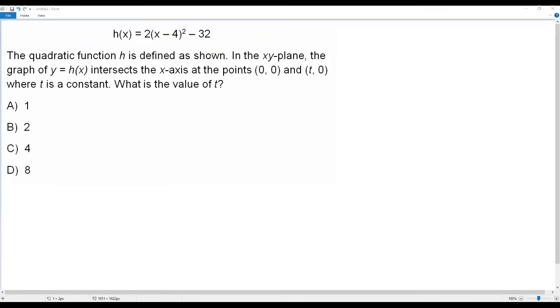The quadratic function h is defined as shown in the xy-plane. The graph of y = h(x) intersects the x-axis at the points (0, 0) and (t, 0), where t is a constant. What is the value of t?